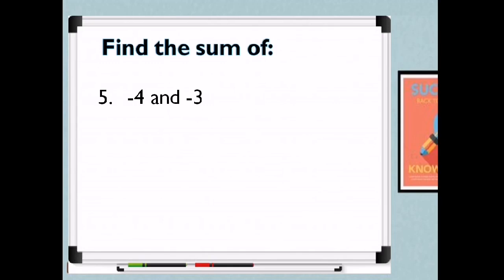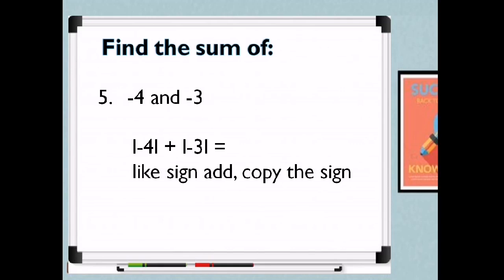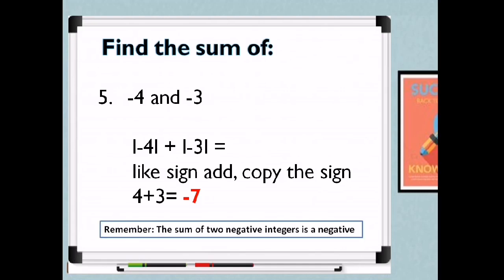For example 5, adding both negative numbers: get the absolute value of negative 4 and negative 3 — that is 4 and 3. Like signs: add and copy the sign. So 4 plus 3 is 7, and we copy the negative sign, giving us negative 7. When adding both negative numbers, get the absolute values, add them, and copy the sign. The sum of two negative integers is a negative integer.